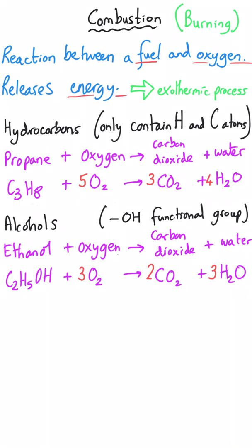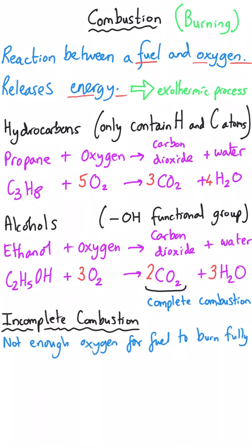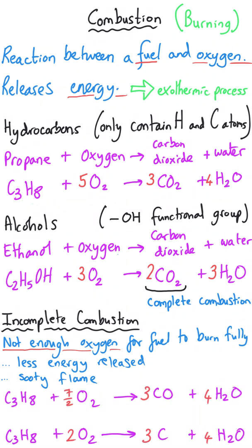These are what's called complete combustion reactions, and that's when the fuel burns completely as you would expect. You can get incomplete combustion, and that's when there is not quite enough oxygen around, and so the fuel will burn less well, produce less energy, burn less cleanly, and you will get unwanted products forming such as carbon monoxide and carbon particulates or soot. Carbon monoxide can be poisonous, and soot can contribute to global dimming.